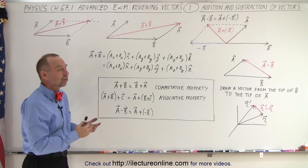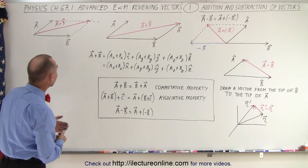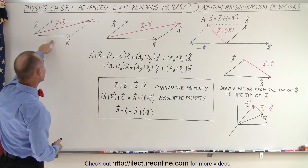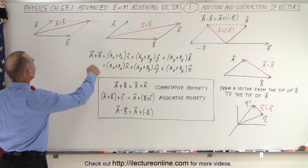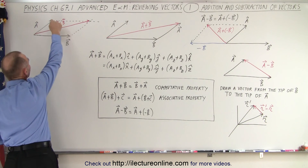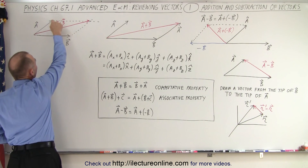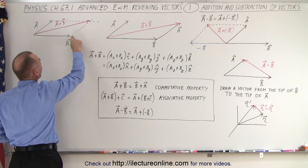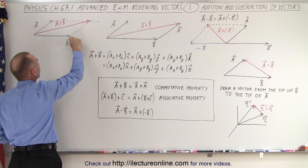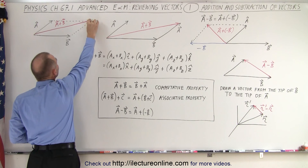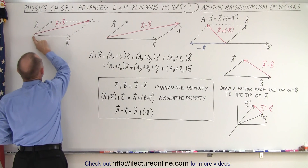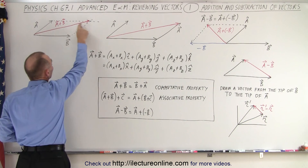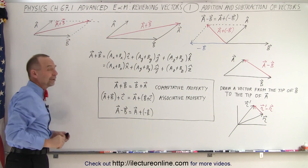What do we mean by adding and subtracting vectors? We can do that graphically. Here we have vector A and vector B. To add the two vectors together, we draw a line parallel from the tip of A, parallel to B, and we draw a line parallel to A starting from the tip of B. Where those two lines meet, we draw a vector from the tail of A and B to where those two lines meet — and that's the sum of A and B.